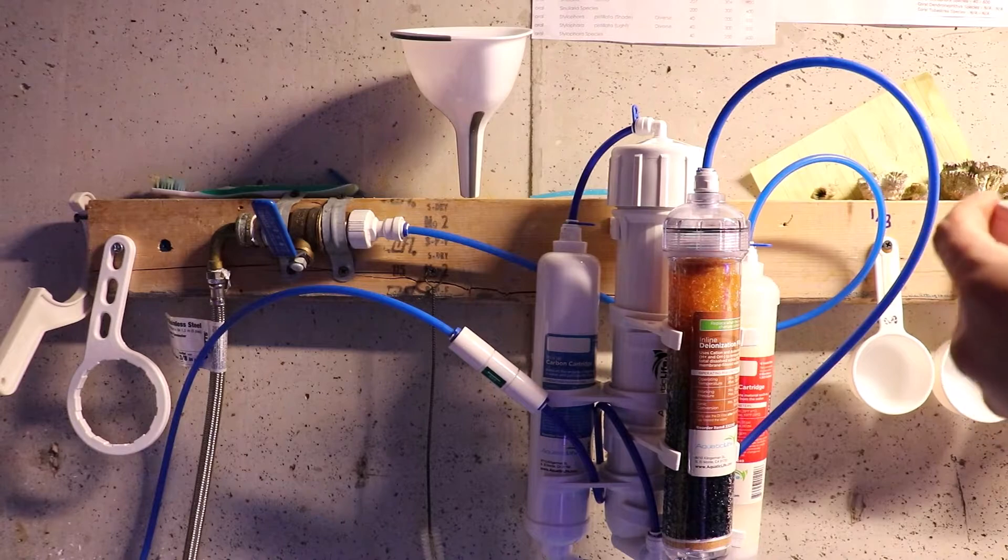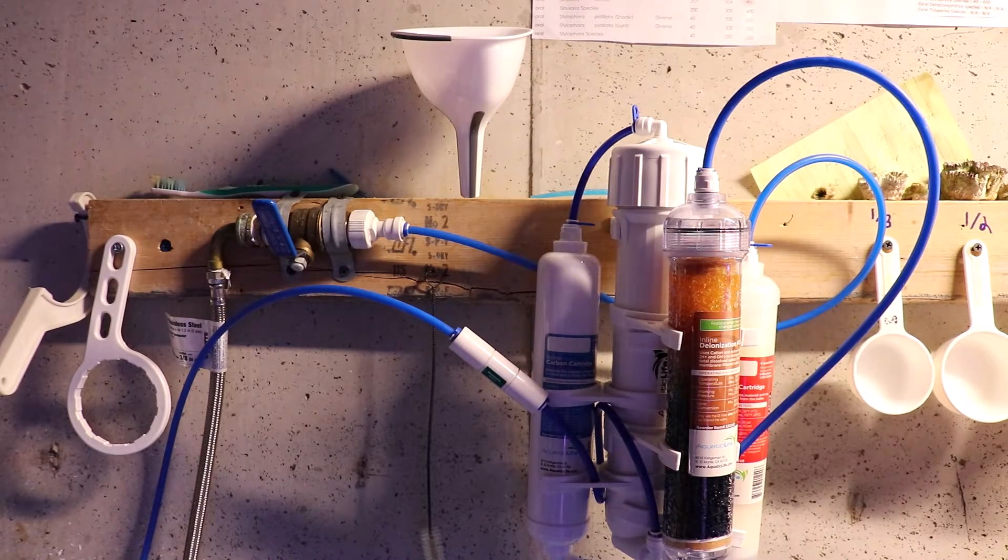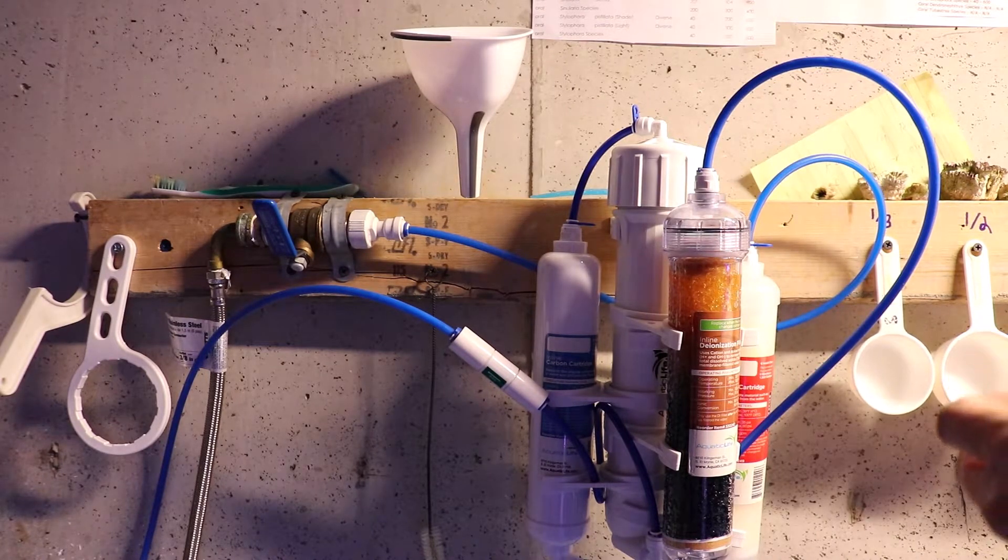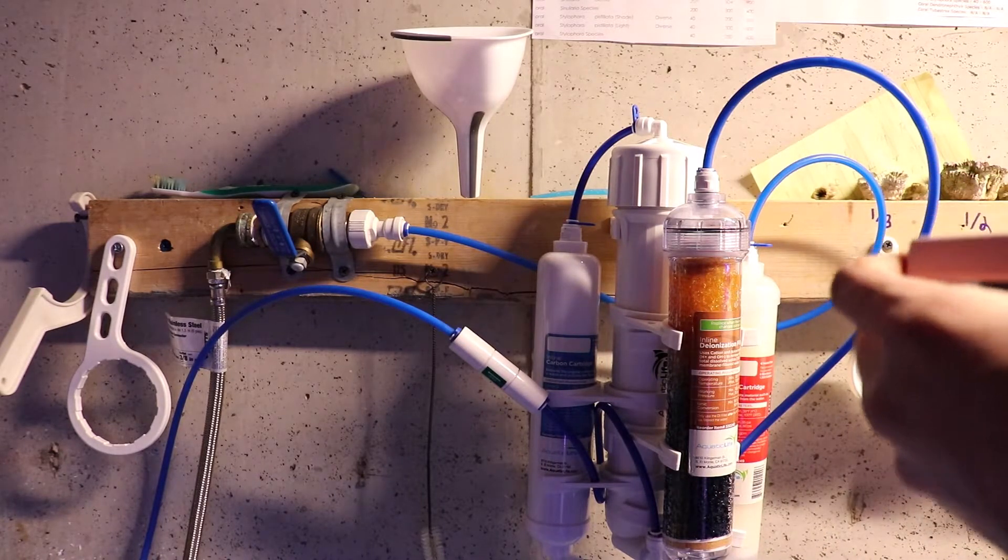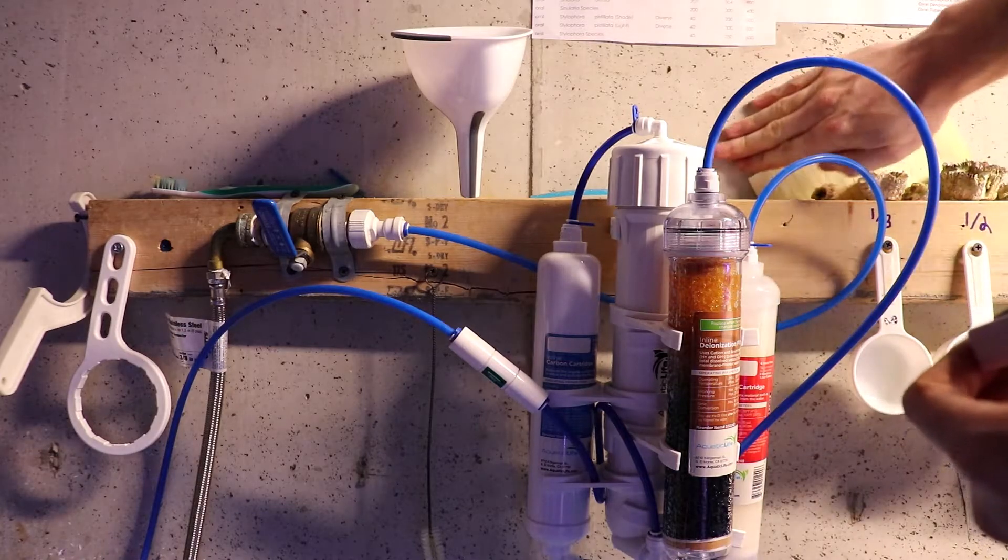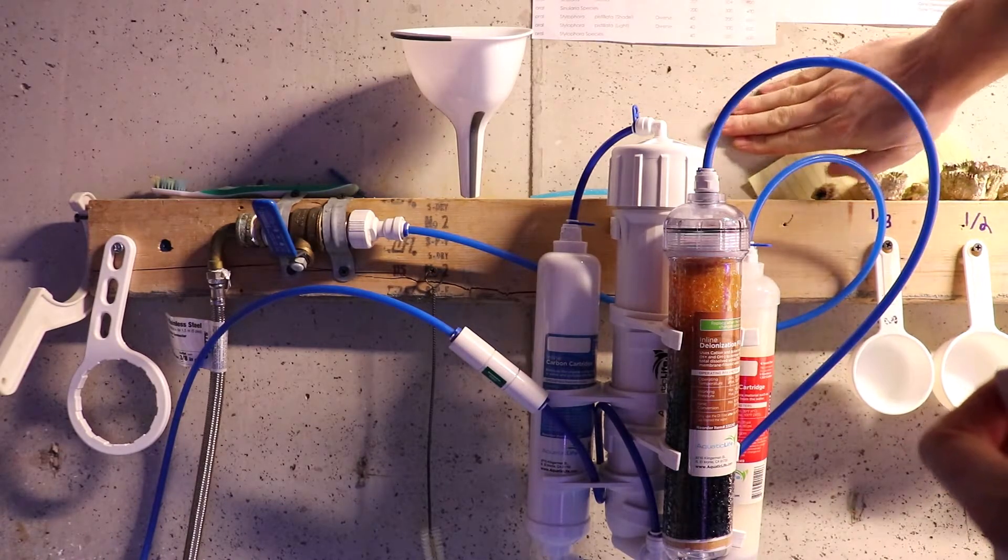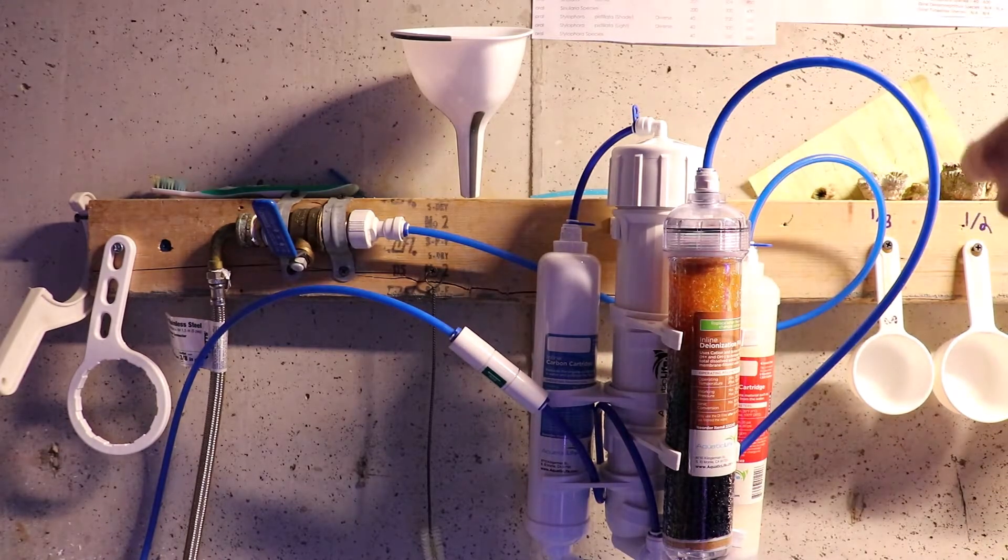Then you've got to figure out where you want to mount your TDS meter itself. I'm just using the Velcro that came on it. I'm going to stick it right to the concrete wall there. If it doesn't stick later I'll screw it to that 2x4 or come up with something else, but quick and easy, I'm just going to pop it on the wall here where it's easy to see.